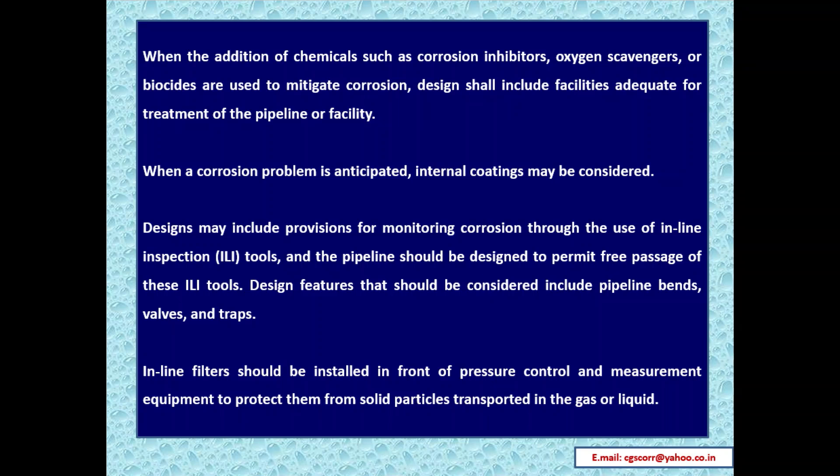When chemicals such as corrosion inhibitors, oxygen scavengers, or biocides are used to mitigate corrosion, the design shall include adequate facilities for treatment. When a corrosion problem is anticipated, internal coatings may be considered. Designs may include provisions for monitoring corrosion through the use of in-line inspection tools. The pipeline should be designed to permit free passage of these ILI tools; design features to consider include pipeline bends, valves, and traps. In-line filters should be installed in front of pressure control and measurement equipment to protect them from solid particles.